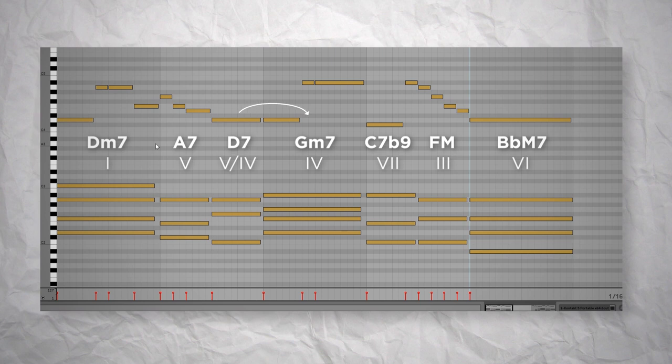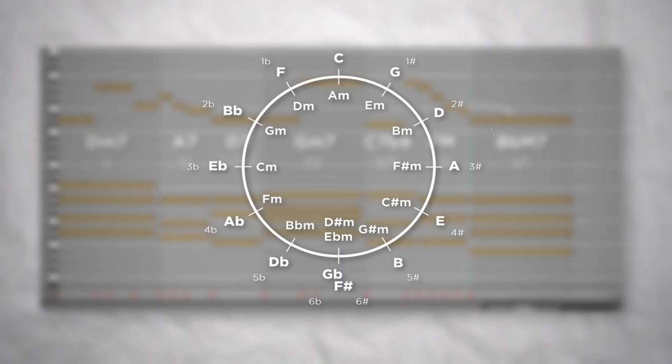So the chord progression would go down a 5th from D to G, then down a 5th from G to C, then again from C to F and then from F to B flat. So it's like always going down on the circle of fifths.